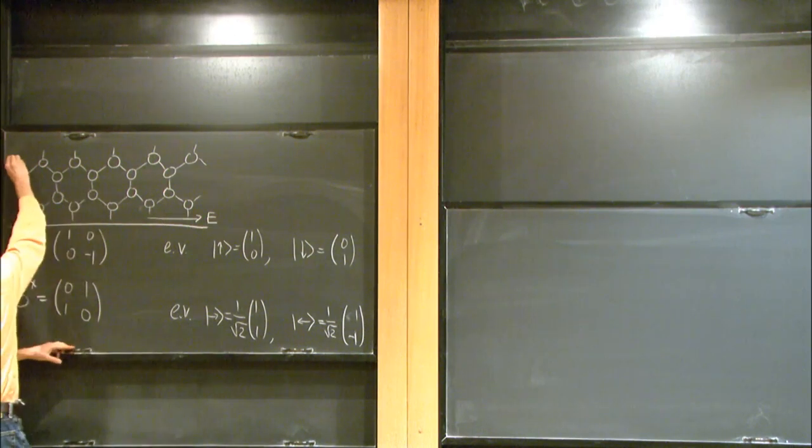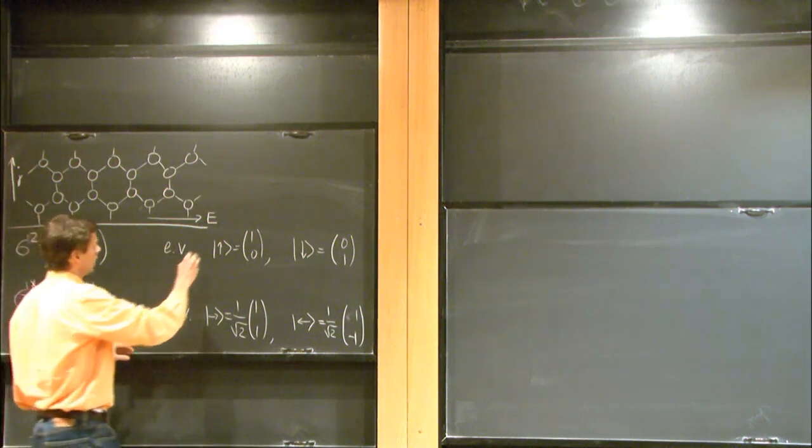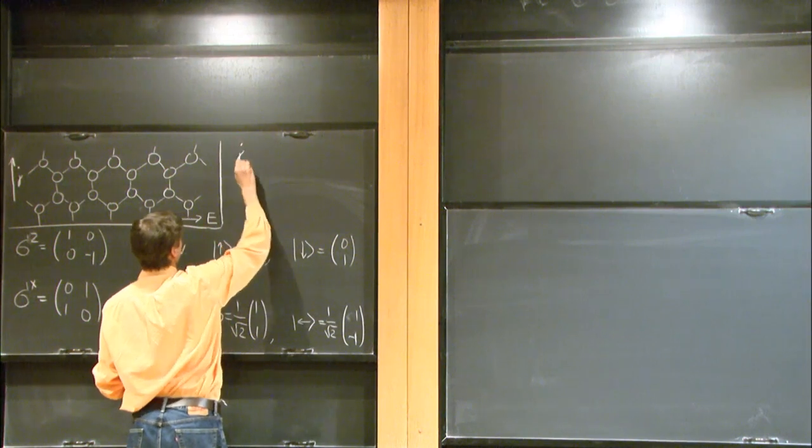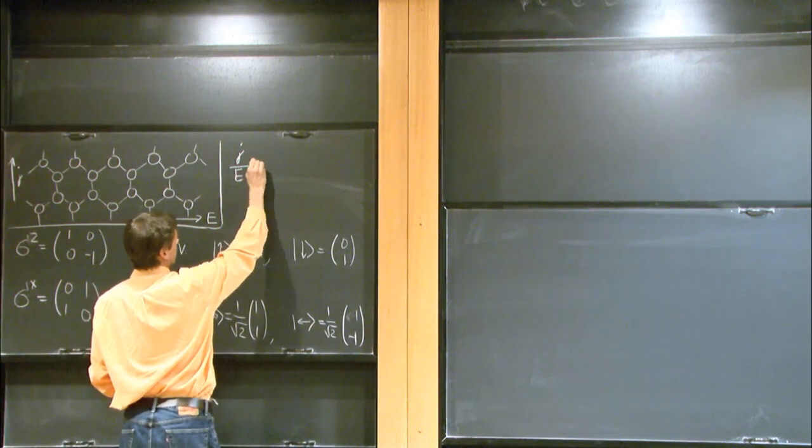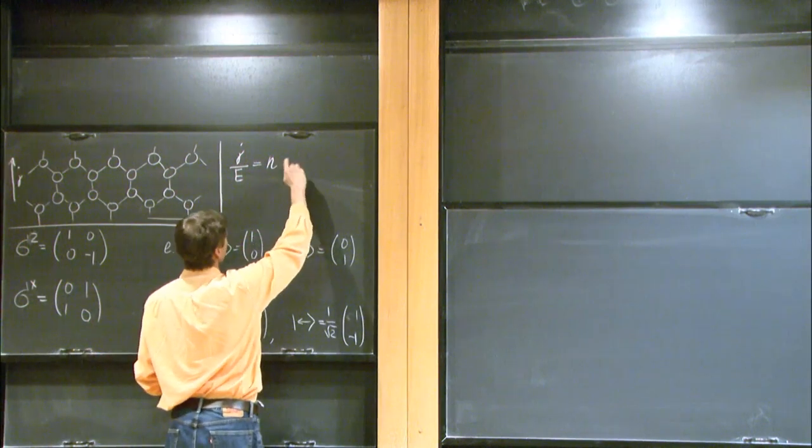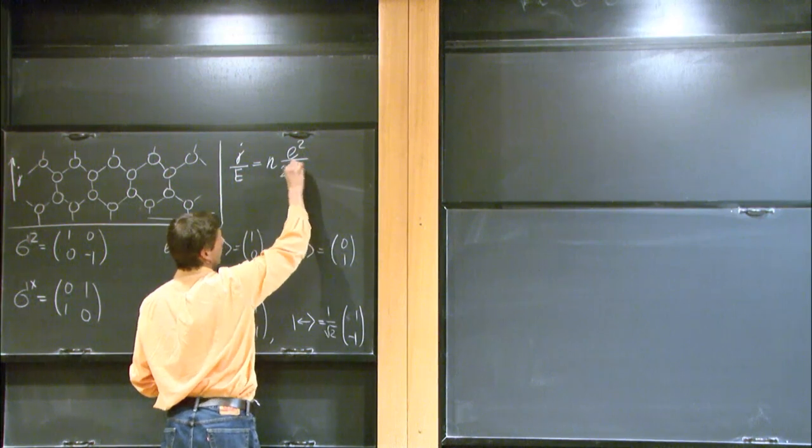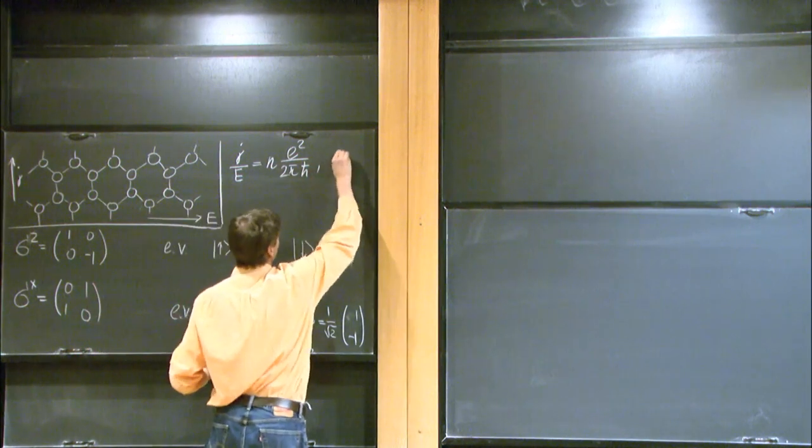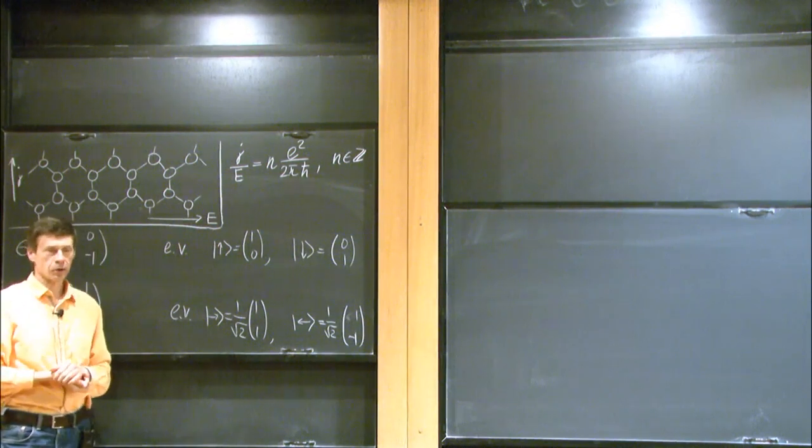it's a Hall material. The current will flow in the perpendicular direction. And the Hall conductivity is the ratio of the current to the electric field. And under the right conditions, it's quantized in units of e squared over 2 pi h bar. This is the Planck constant.